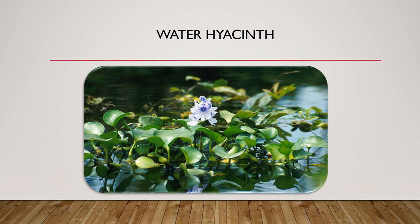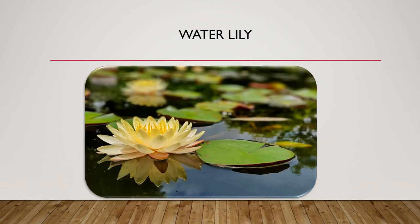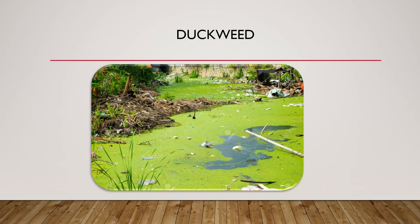Weeds like duckweed, which grow in water, can choke water bodies and make it difficult for other animals and plants to survive. This is duckweed — a very small plant that floats over the water. Water lilies grow in still or slowly moving water that is rich in oxygen and nutrients.